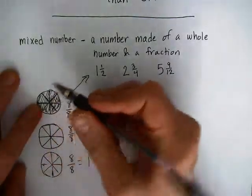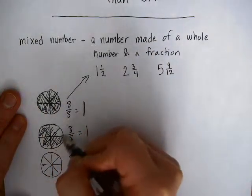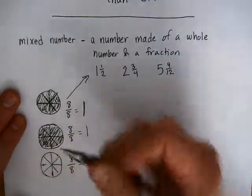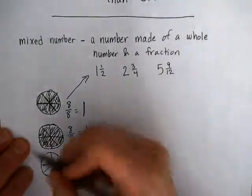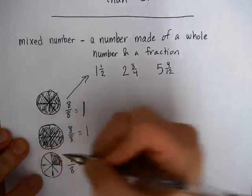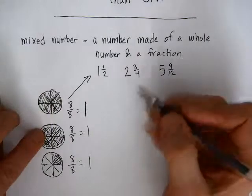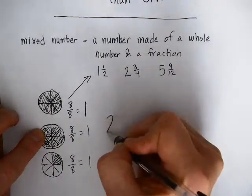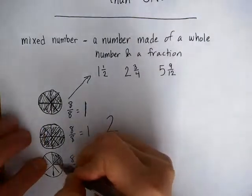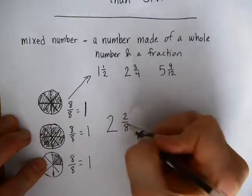Now, let's say your family ate this whole pizza, and then your family ate this whole pizza. But by the time they got to the third pizza, your family was kind of full, so they just ate this much of that pizza. This is how we're going to get mixed numbers. How much did your family eat? Your family ate 2 whole pizzas and 2 eighths of another pizza.